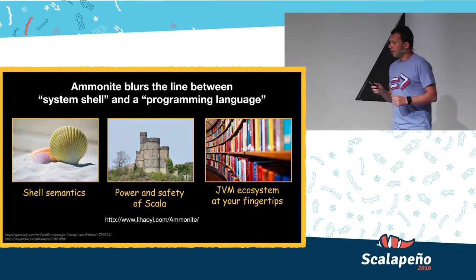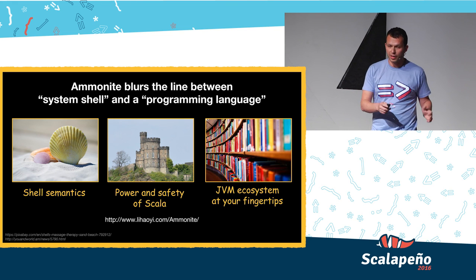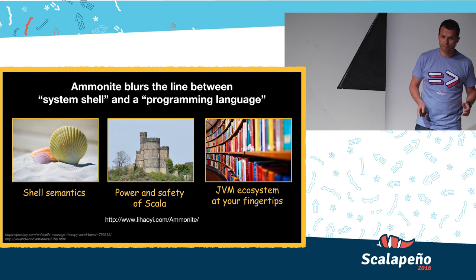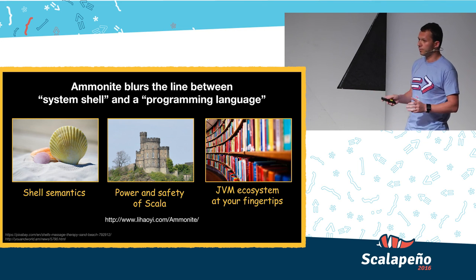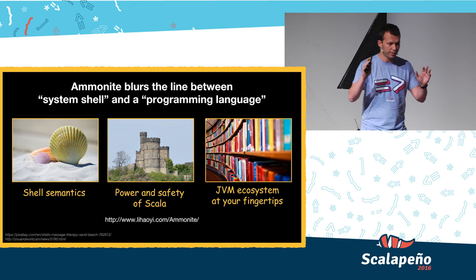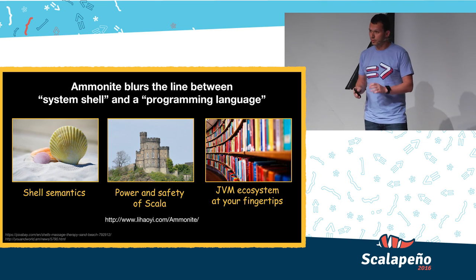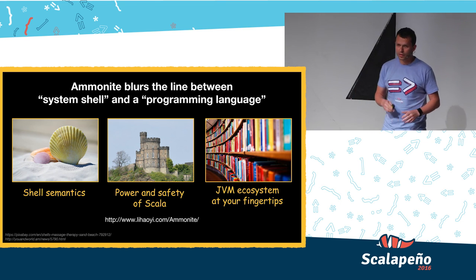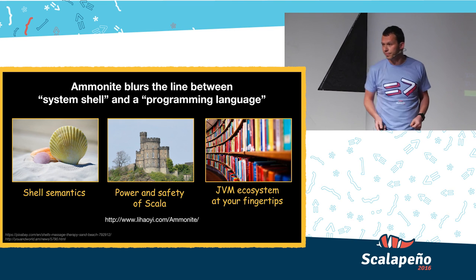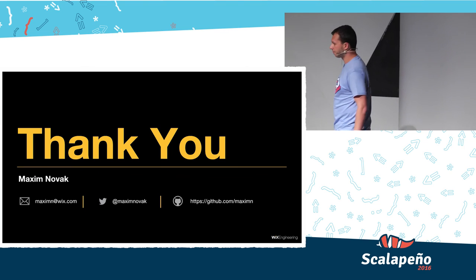To wrap up: Ammonite blurs the line between a system shell and a programming language. It provides you with the semantics of a shell combined with the power and safety of Scala, and on top of it you can use all the JVM ecosystem at your fingertips. This was a very small taste of Ammonite — I encourage you all to go to the website, read a little bit more about it, and try it yourself. Thank you.